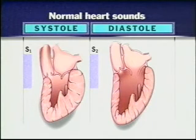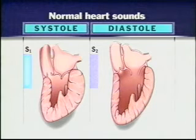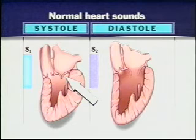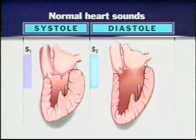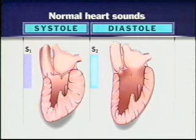Before auscultating the heart, let's review normal heart sounds. Closure of the heart valves creates a pair of audible heart sounds. The first sound, S1, accompanies mitral valve closure. The second sound, S2, accompanies aortic valve closure. Pulmonic and tricuspid valve closure may also contribute to these sounds.